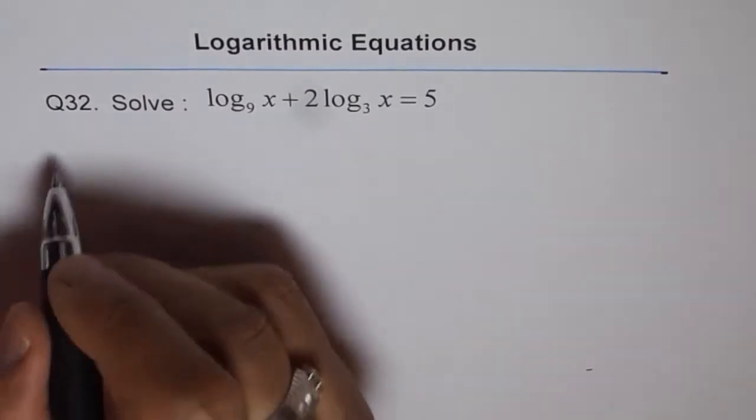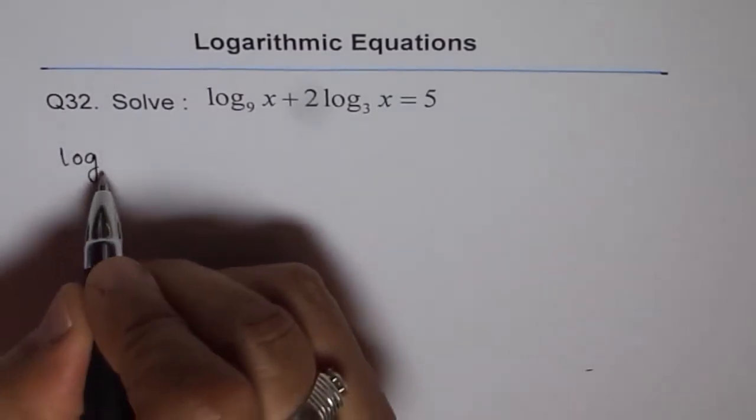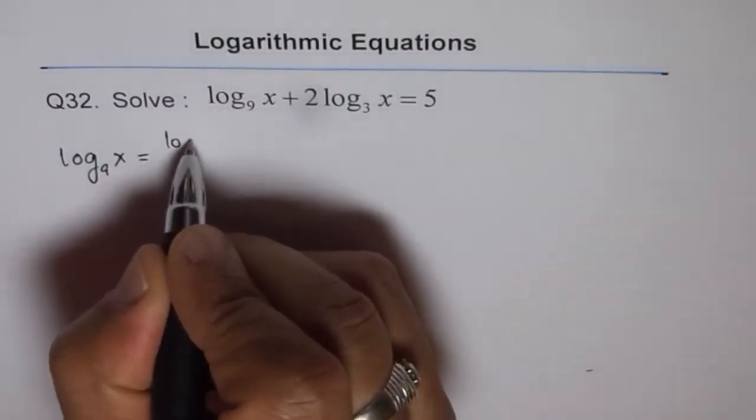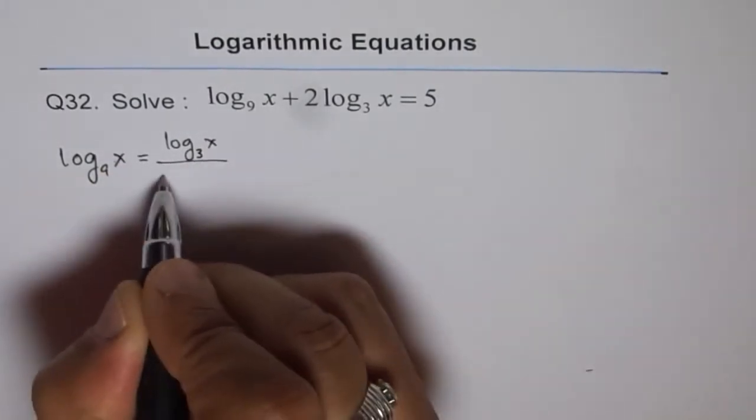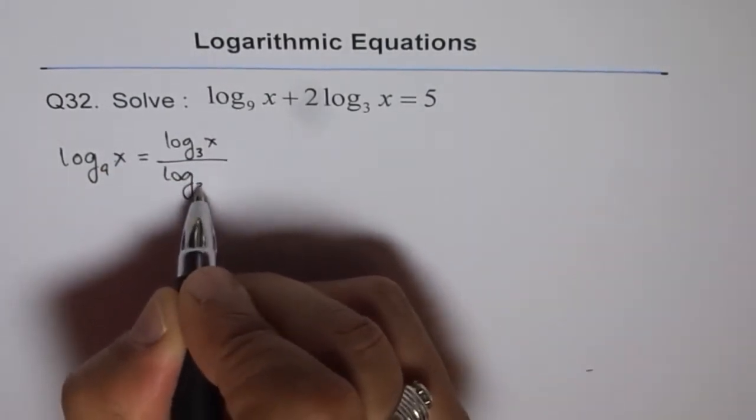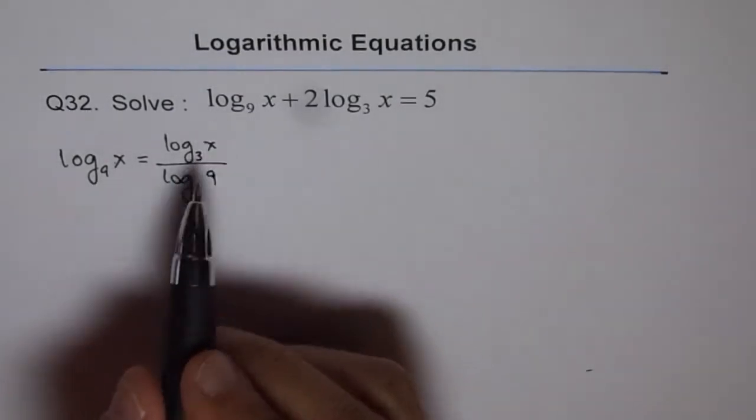We should change the base of log base 9 of x to log base 3 of x. Using the change of base formula, log base 9 of x can be written as log base 3 of x divided by log base 3 of 9. That is how we change the base from 9 to 3.